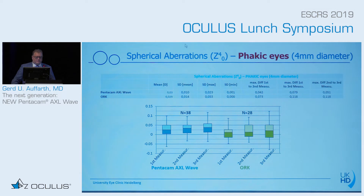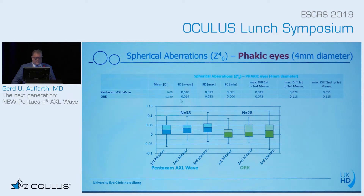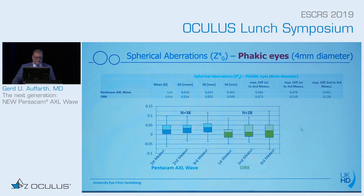Looking at spherical aberration in phakic eyes, here is a comparison between the Pentacam and the Schwind wavefront analyzer. You can see the first, second, and third measurements with the Pentacam-RXL, and here with the Schwind device — they measure more or less exactly the same. Standard deviation is similar in both machines, a little bit better with the Pentacam. The difference between first and second, first and third, and second and third measurements is much smaller in the Pentacam-RXL compared to the Schwind device.